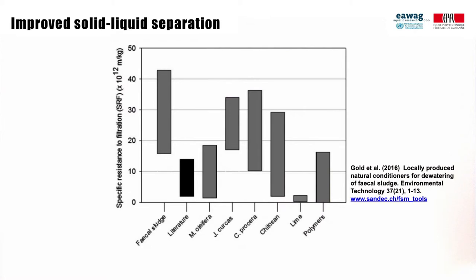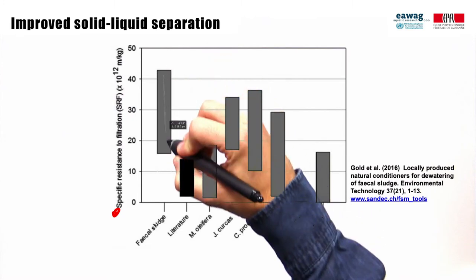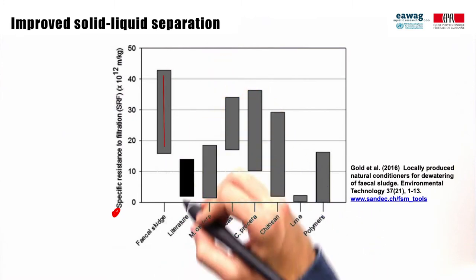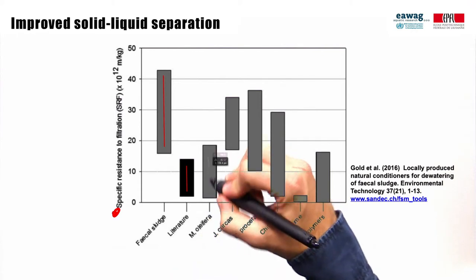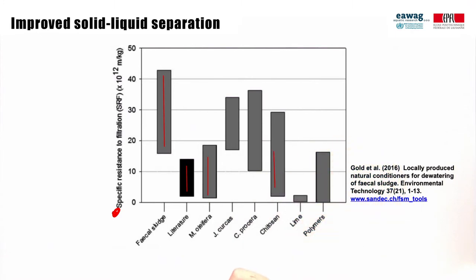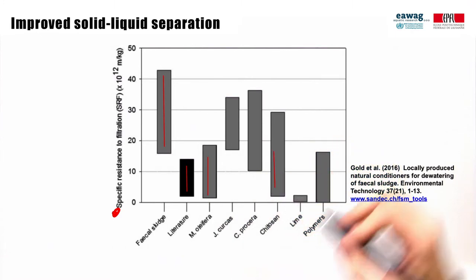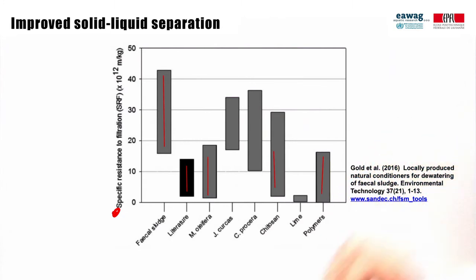This graph shows the results of specific resistance to filtration. Specific resistance to filtration is another metric to measure the dewatering rate — a low resistance to filtration means fast dewatering. From this graph we can draw two conclusions. Firstly, the dewatering rate of unconditioned fecal sludge is significantly lower than those compared to wastewater and water treatment sludge results from the literature. Secondly, Moringa oleifera and Kaitosan were as effective at increasing dewatering as commercial polymers used in wastewater sludge treatment.